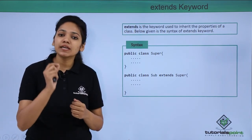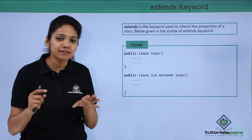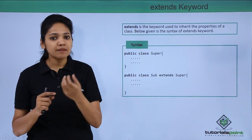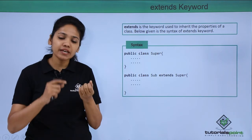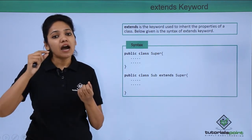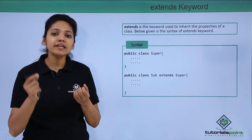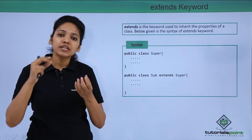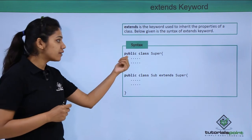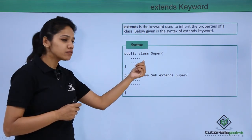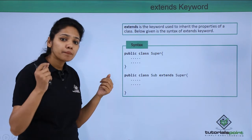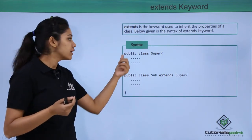The extends keyword is mainly written in the class declaration. You write your class name — the new class that you are creating — followed by the extends keyword, and after the keyword you write the parent class from which this class is inheriting the properties. A super class is nothing but your parent class or a base class.